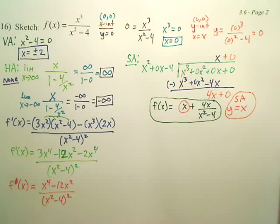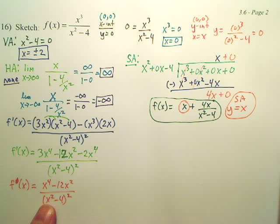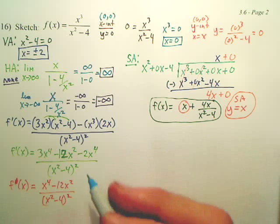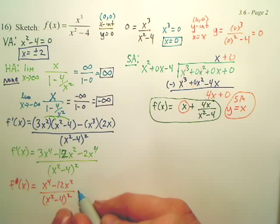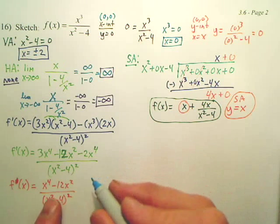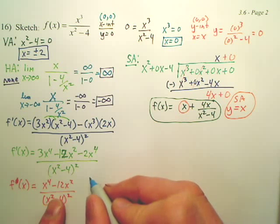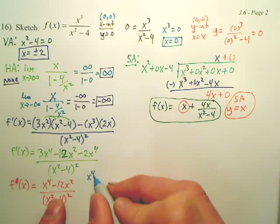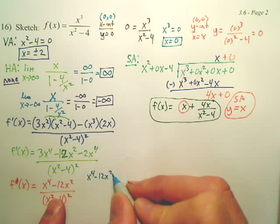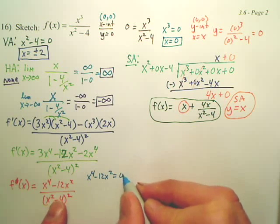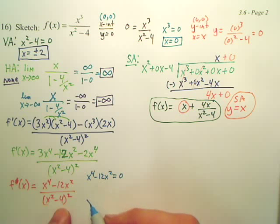Why do we get that? We're now going to set this equal to 0, find the critical numbers. We're then going to take this, find the second derivative of it, find points of inflections possibly. So, to do this, we're going to set this equal to 0. So basically, we're going to set x to the fourth minus 12x squared equal to 0. And we're going to set x squared minus 4 squared equal to 0.